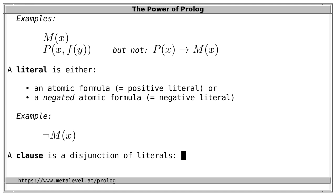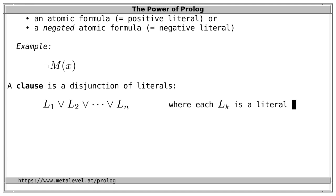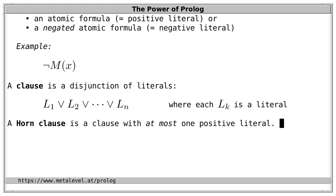A clause is a disjunction of literals. That is, a clause has the form l1 or l2 or and so on or ln, where each lk is a literal. A Horn clause is a clause with at most one positive literal, and Horn clauses are named after the logician Alfred Horn. A Horn clause has at most one positive literal.